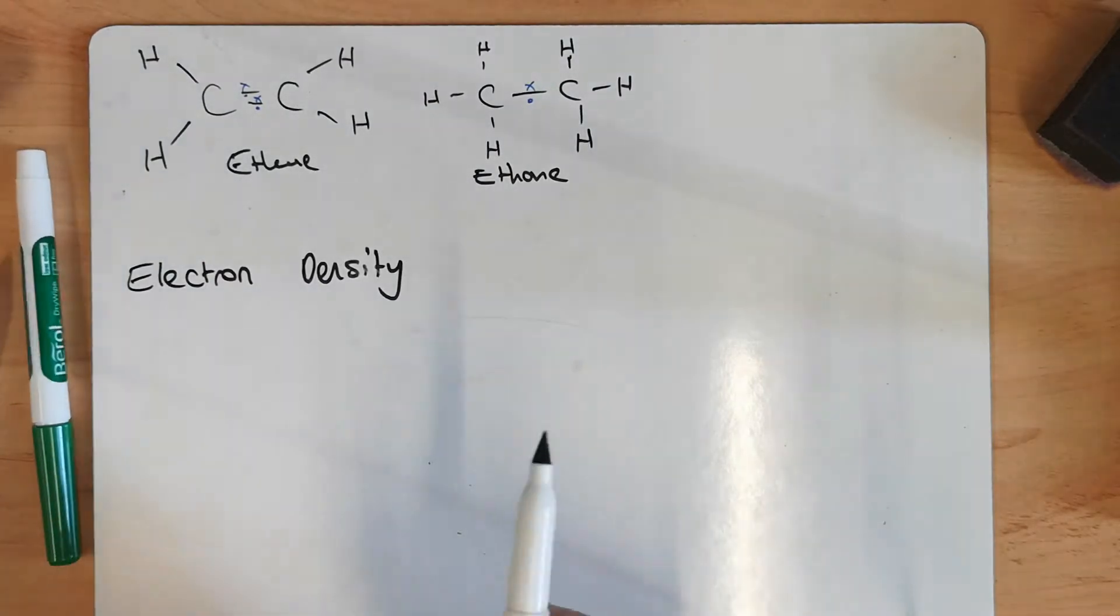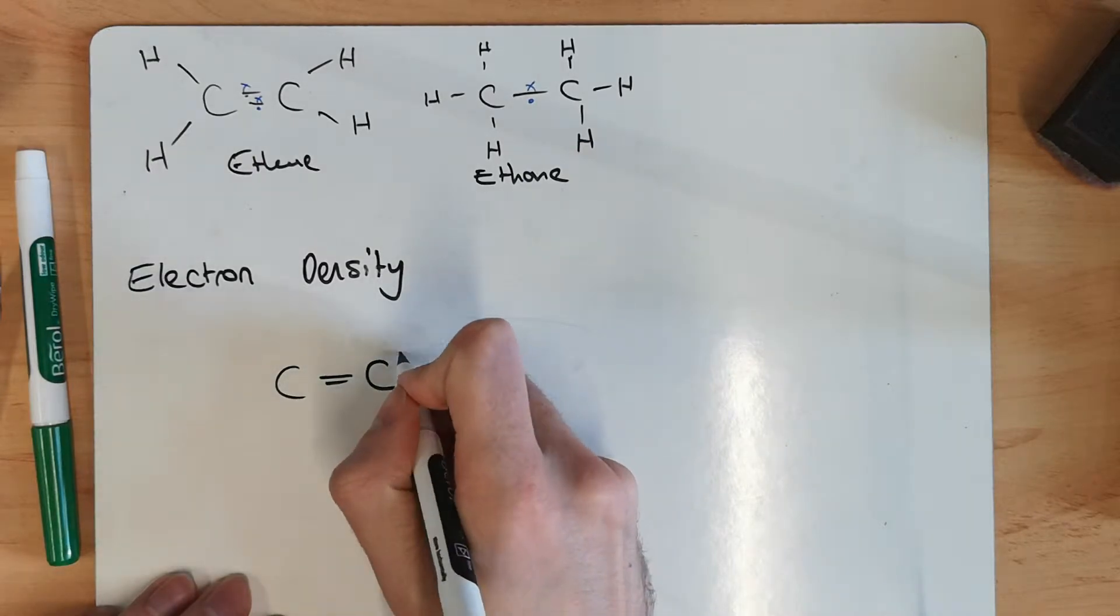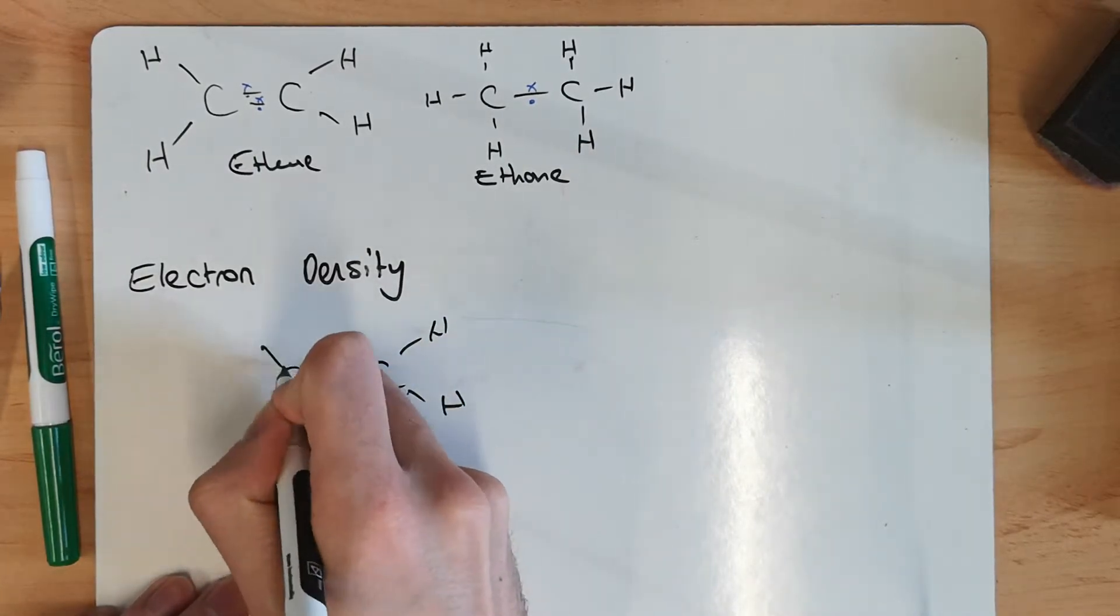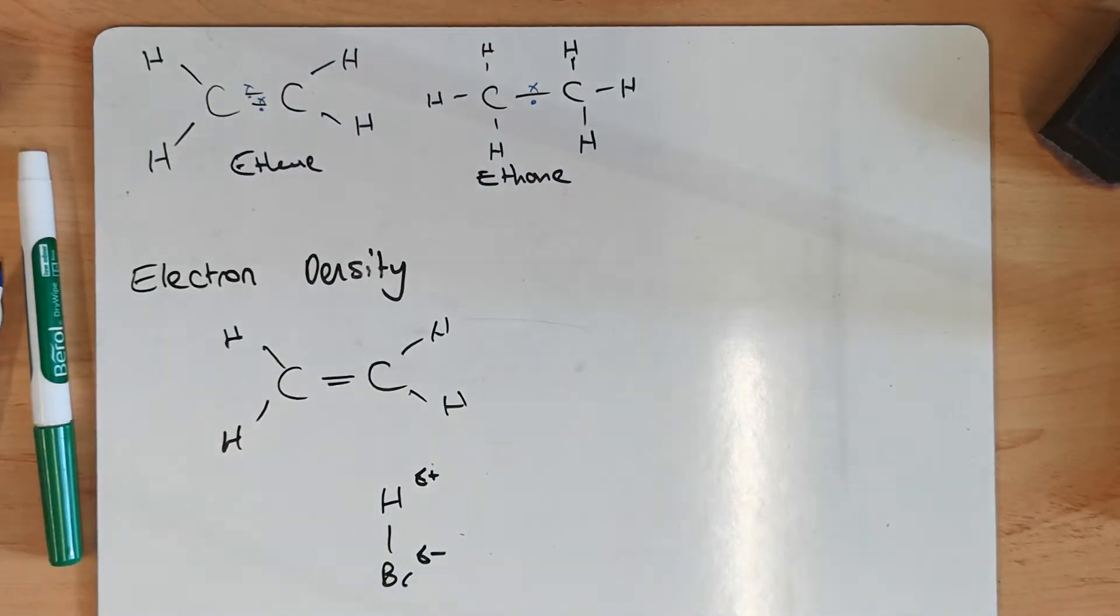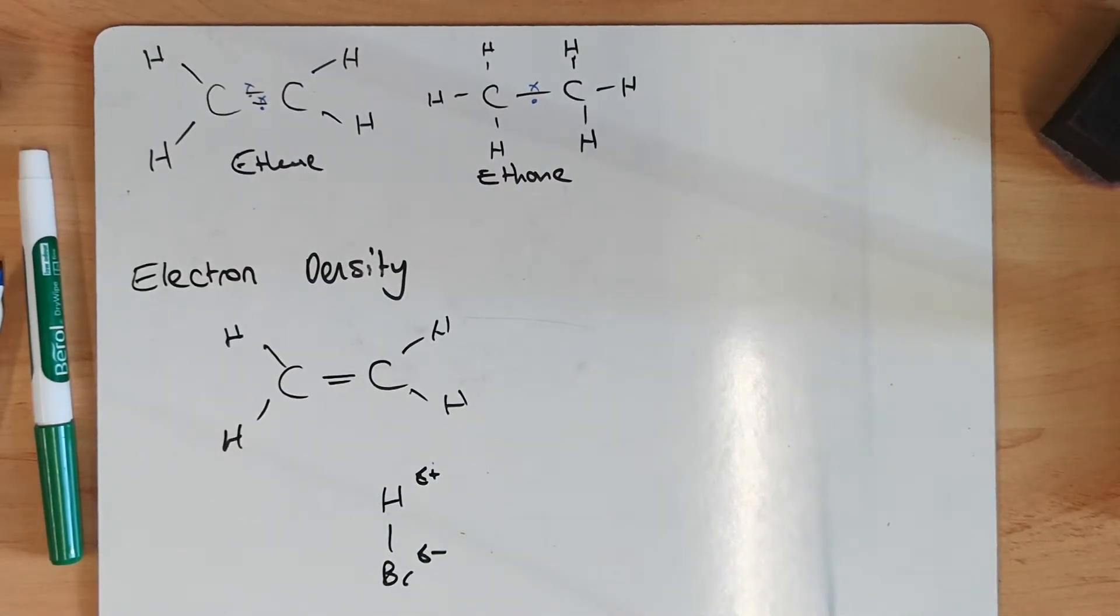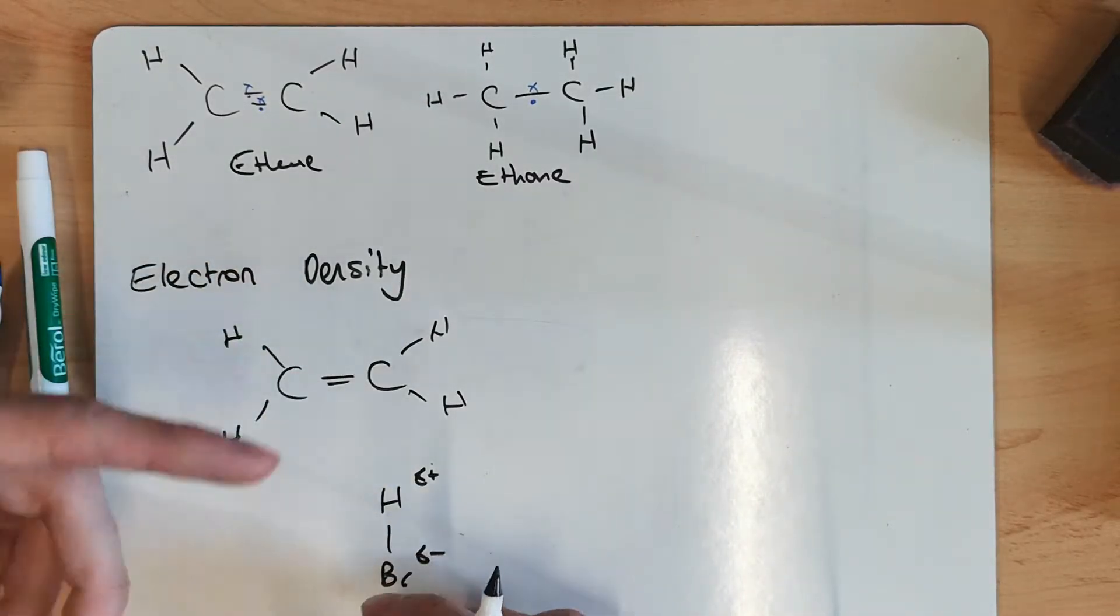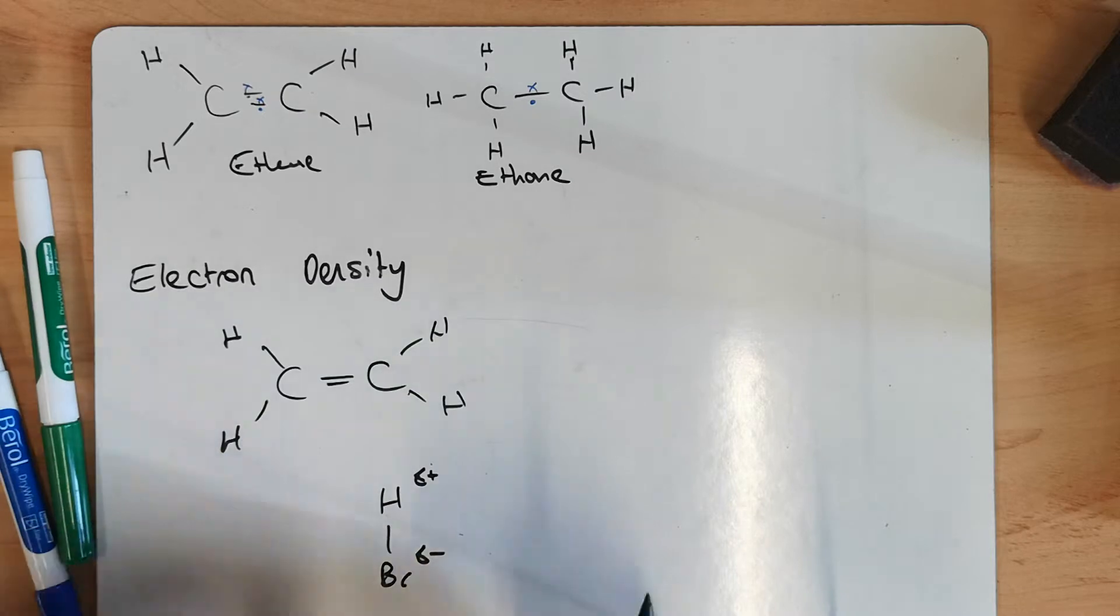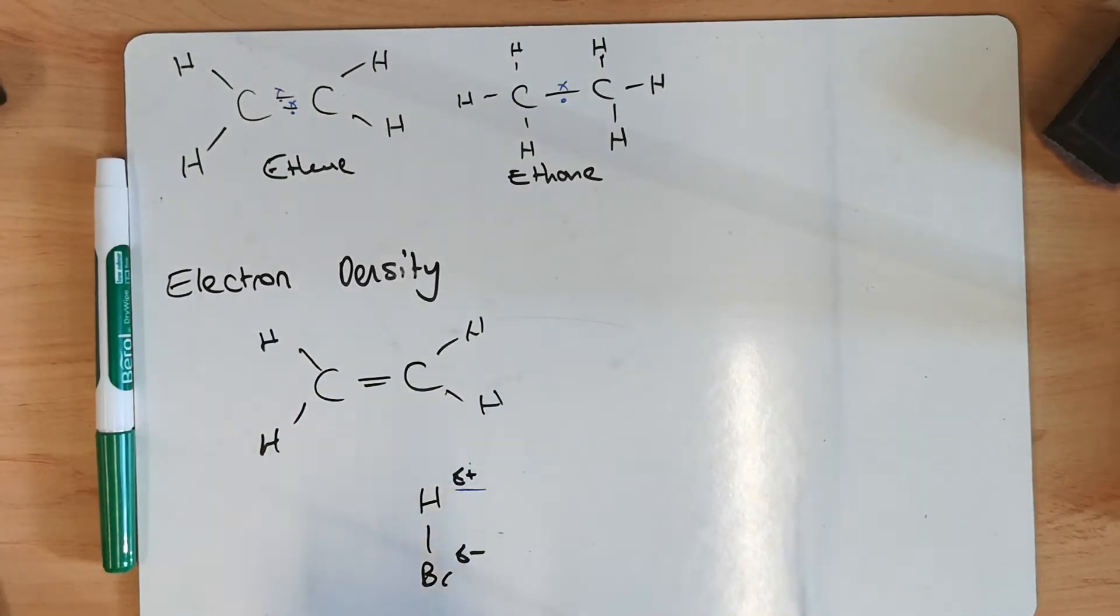And that's important because, let's draw on our ethene. Let's draw something that, in this case, is polar. So I'm going to put hydrogen bromide, which is delta positive, delta negative. Now, this hydrogen bromide, if it's a long way from the alkene, it won't react. However, because we have a positive charge here and an area of electron density here...